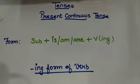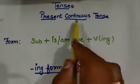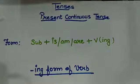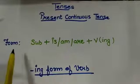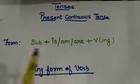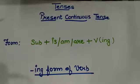Now, what we mean by continuity? Here, continuity means the work is actually happening. So the form we use in present continuous tense is subject plus is/am/are plus ing form of the verb.